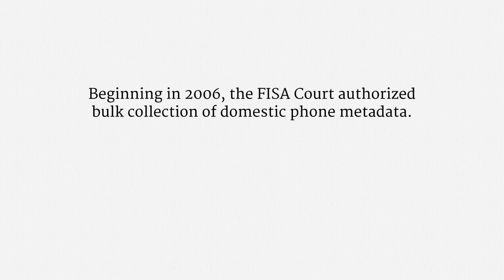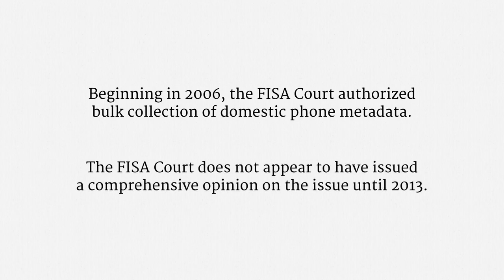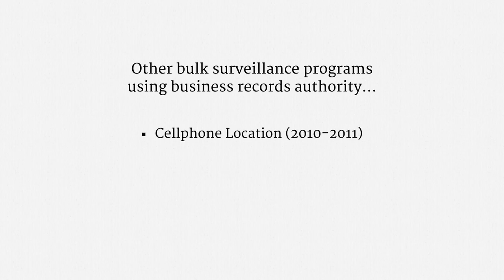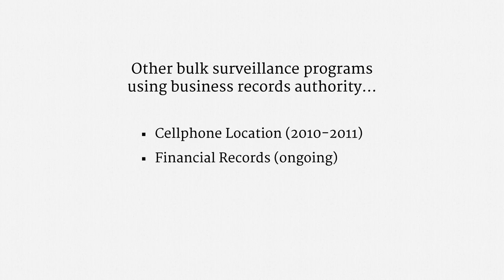Section 215 has been used for bulk surveillance programs. Beginning in 2006, the FISA court authorized bulk collection of domestic phone metadata. Strangely, the FISA court does not appear to have issued a comprehensive opinion on bulk surveillance under the Business Record Authority until 2013, after the Snowden leaks — not exactly a hallmark of rigorous judicial oversight. There have been other domestic bulk surveillance programs using the FISA Business Records Authority. In what it dubbed a test trial, the NSA collected bulk cell phone location information between 2010 and 2011. There is also a program under which the CIA collects bulk domestic financial records — that's ongoing, and very little is known about it.